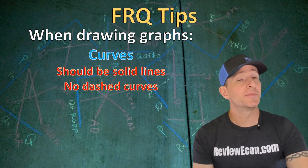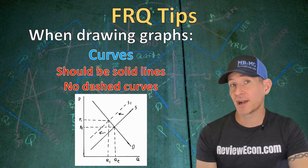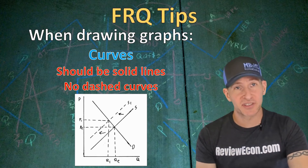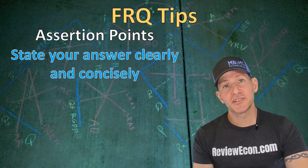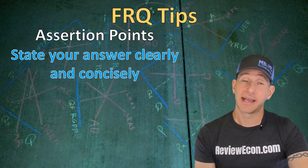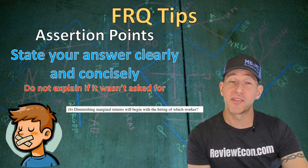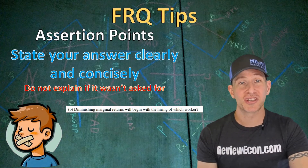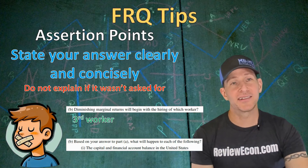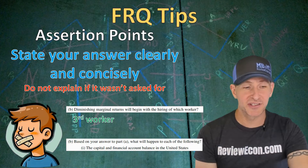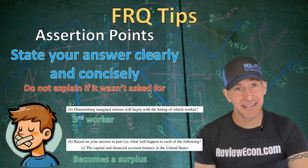When you draw your graphs, your curves should be solid lines, not dashed. Dashes should be used to connect points within the graph to the prices or quantities on the axis, but the curves themselves should be solid lines. When it comes to assertion points on your free response questions, state your answer clearly and concisely, and don't explain if an explanation wasn't asked for. If the question asks which worker diminishing returns begin on, just state the worker — in this case, the third worker. If asked what happens to the capital and financial account balance, just state what happens — in this case, it becomes a surplus.